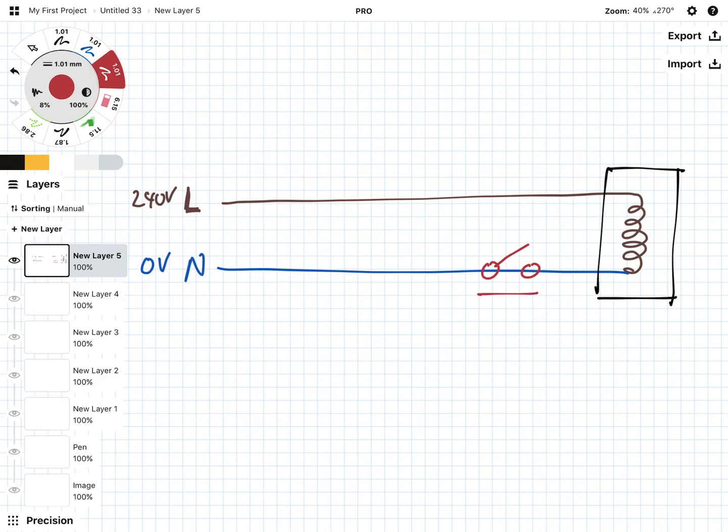If the switch is on the neutral wire, if I open the switch here, these appliances can be switched off or on. So that is not the reason whether it's on the neutral wire or on the live wire.